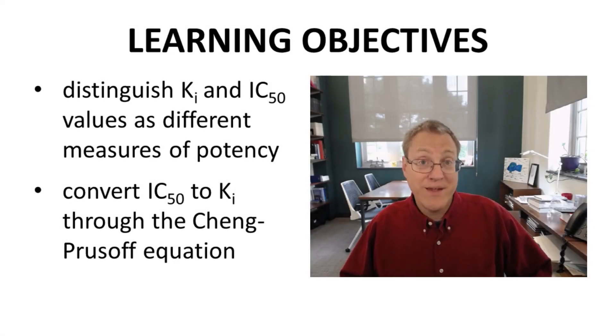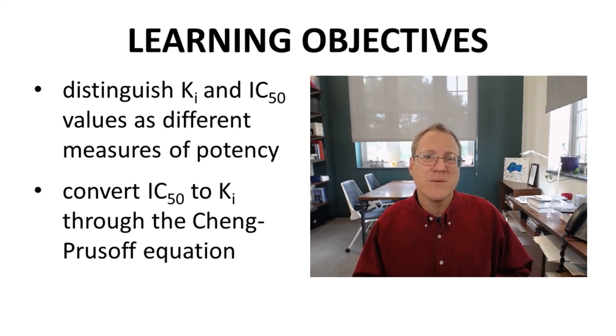We have now made a distinction between KI and IC50 values, which are both measures of potency but cannot be compared directly. We have also learned how to convert IC50 values to KI values based on the experimental conditions of the inhibition assay.